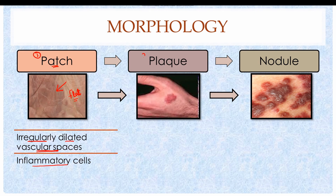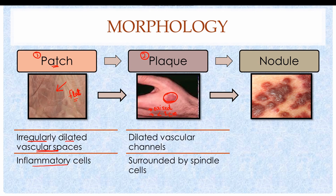The second phase is the plaque stage. These are raised lesions with a violet color, and in most cases they are less than 1 cm in size. They are composed of dilated vascular channels, and the blood vessel is surrounded by spindle cells along with inflammatory cells.